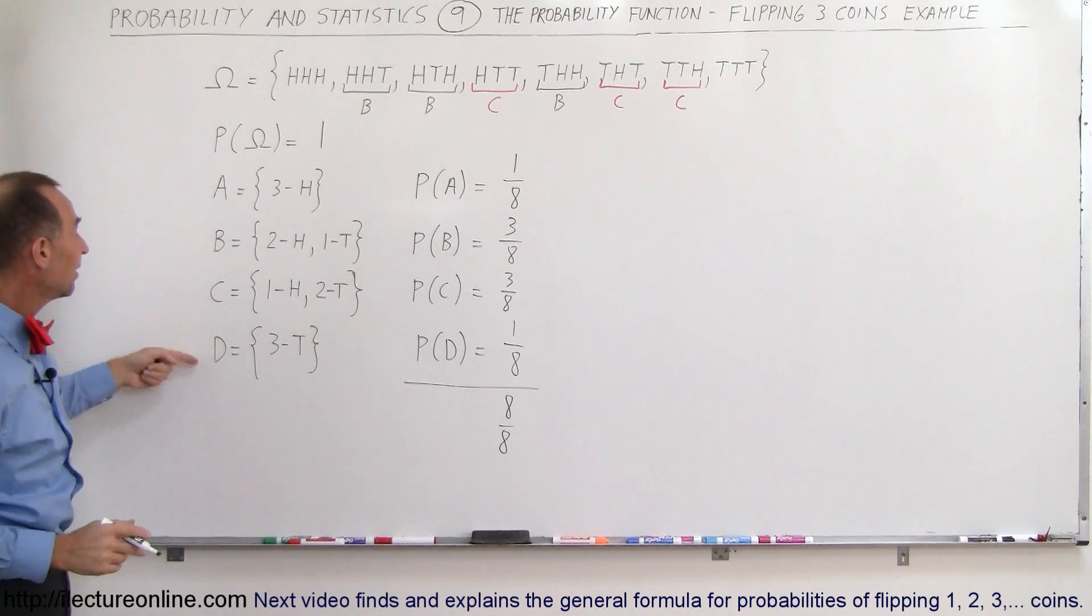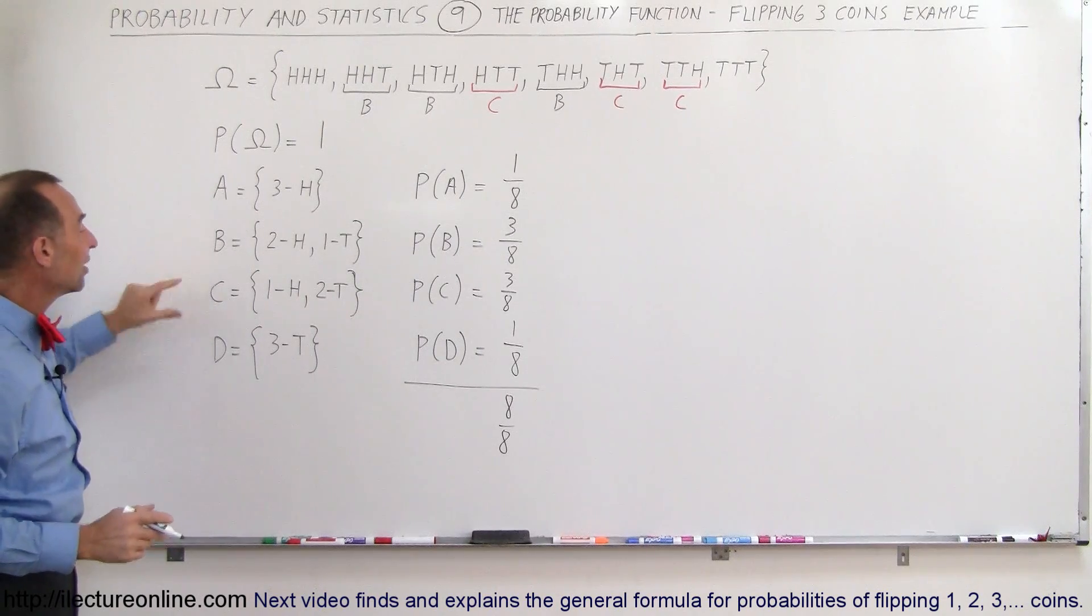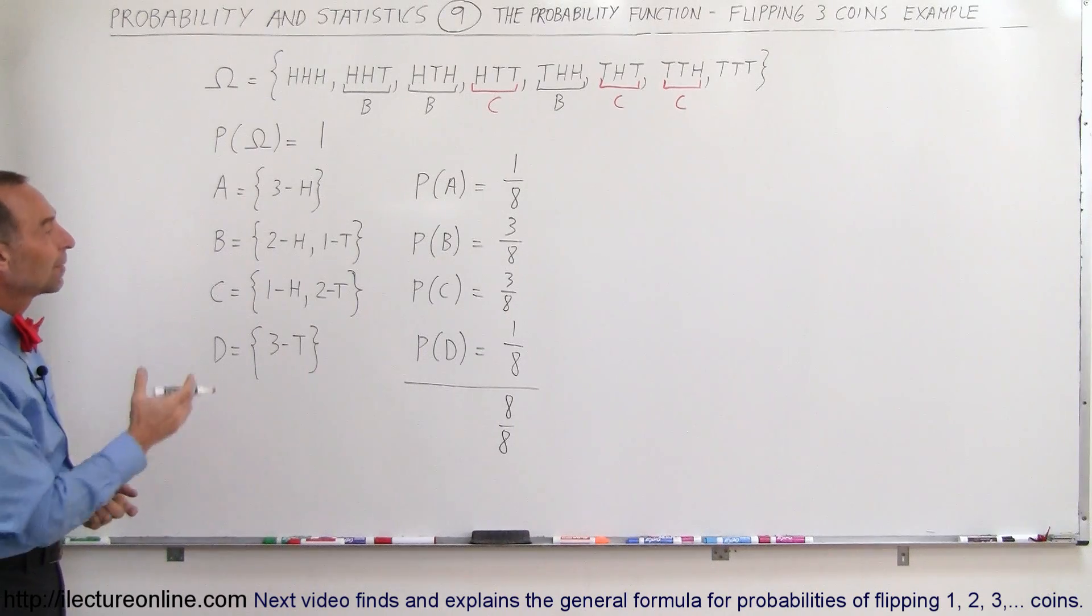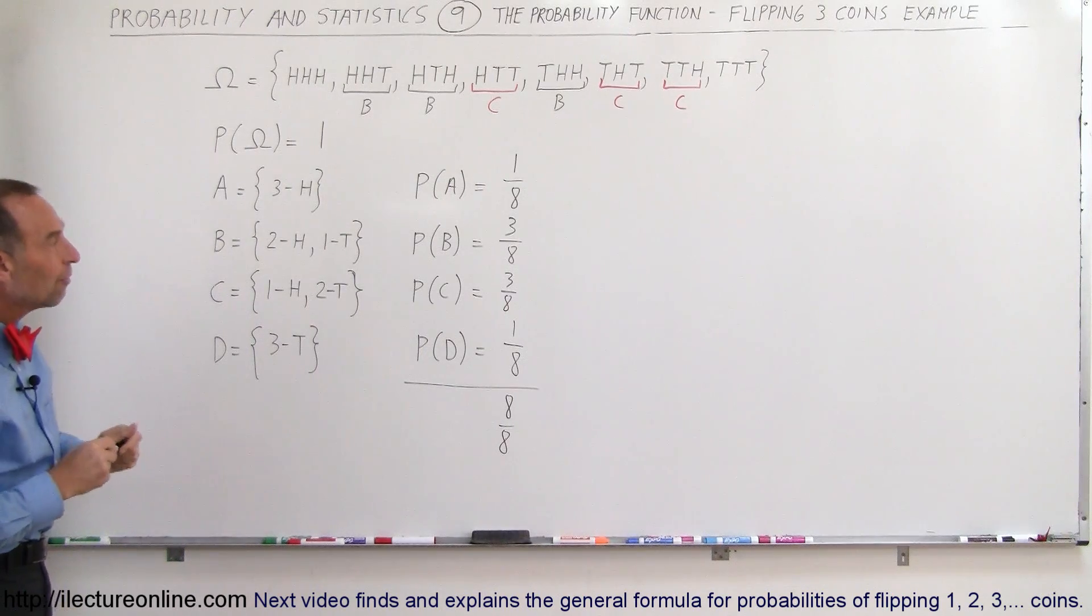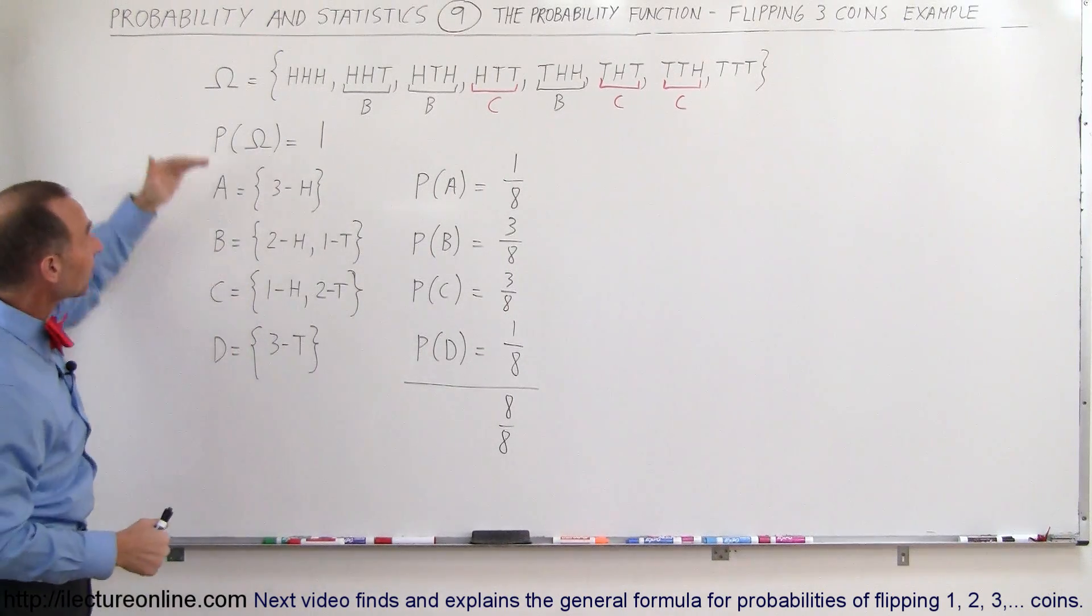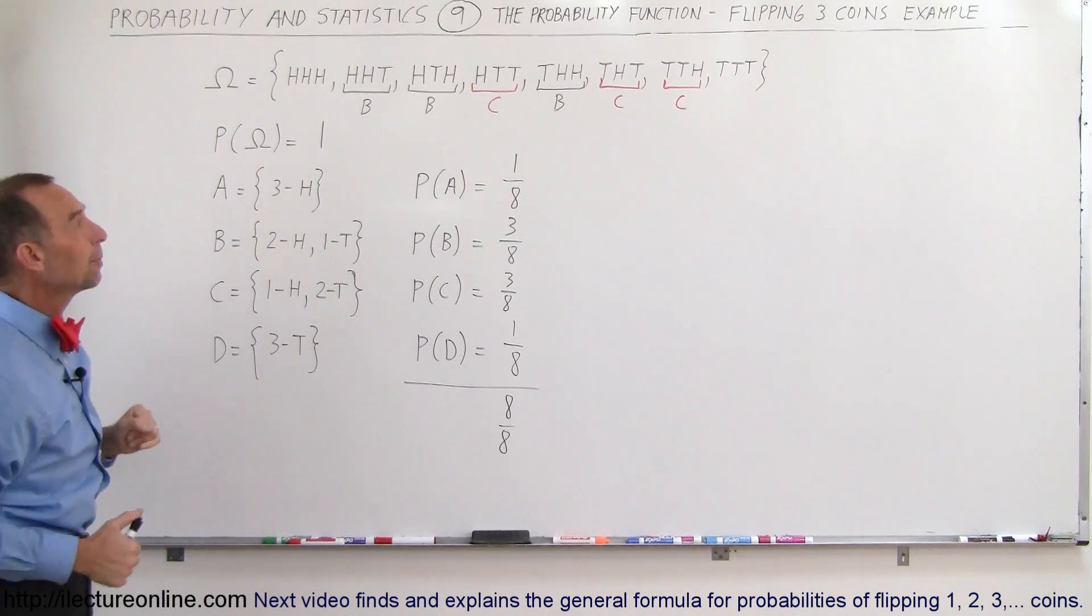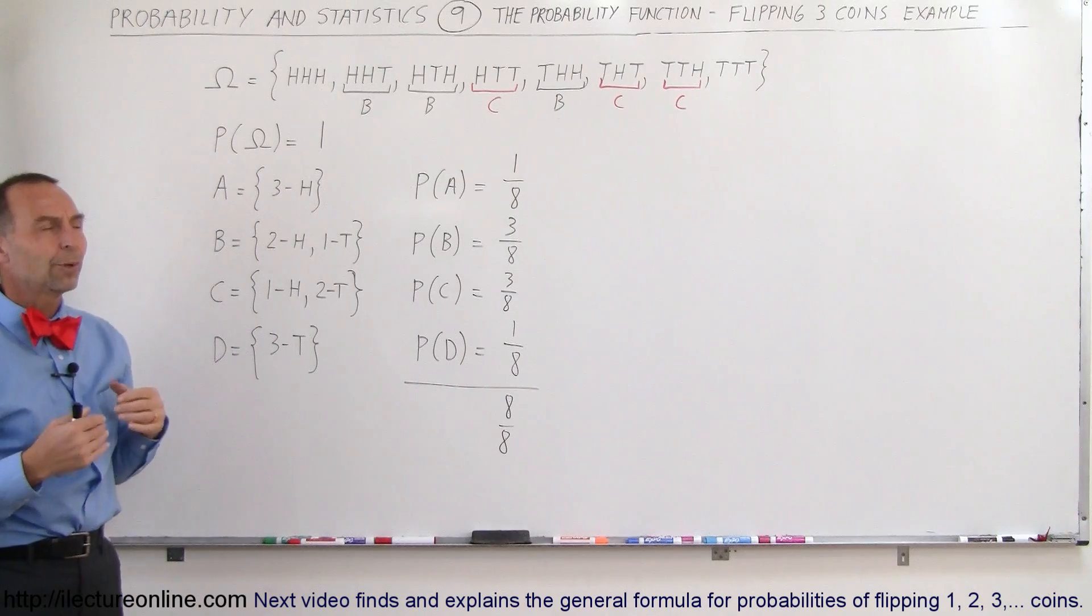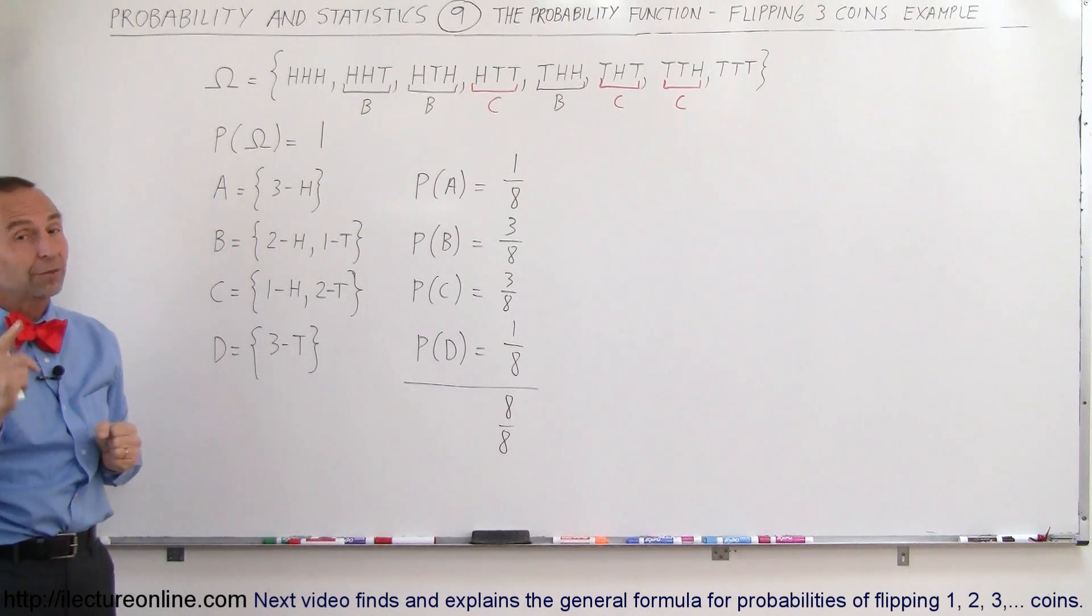Events A, B, C, and D together add up to the whole sample space. And so there's a quick example of how we deal with events, sample spaces, and the probability function. Of course, that seems pretty straightforward. What do we do with more complicated problems? Well, for that, you'll have to watch some more videos because we'll show you some more complicated examples in the next several videos.